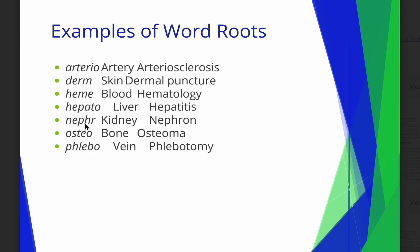Nepher stands for kidneys. Nephron is a part of the kidney. Your kidneys filter your blood — all the blood in your body goes through your kidneys and they filter it. They decide what water to keep and what to dump, what vitamins to keep and what to get rid of. They dump the waste into your bladder and you urinate it out. That's why kidneys are related to urine.